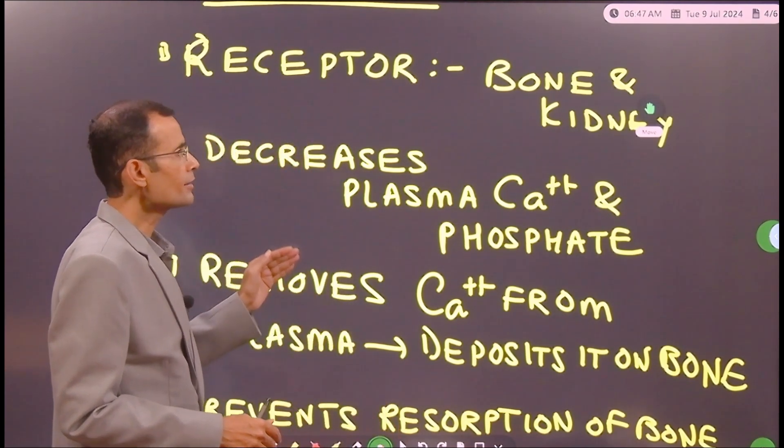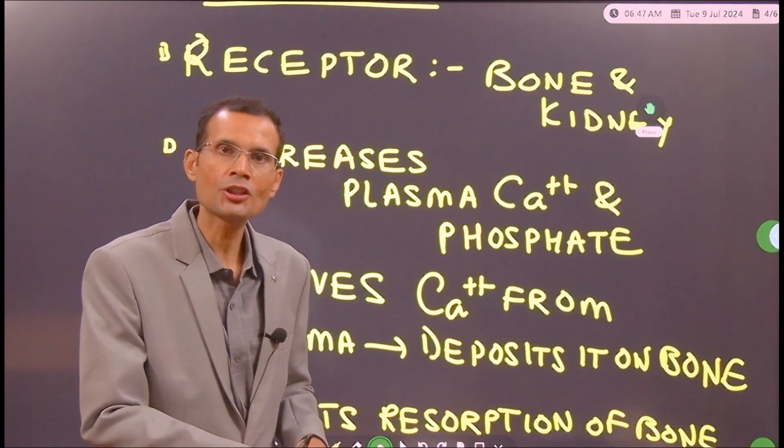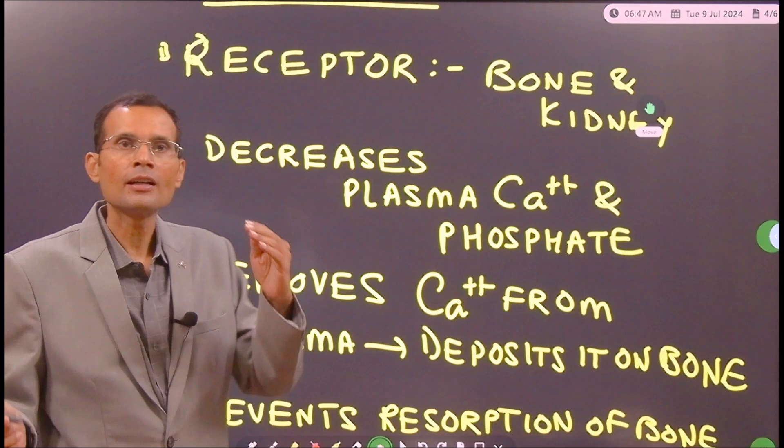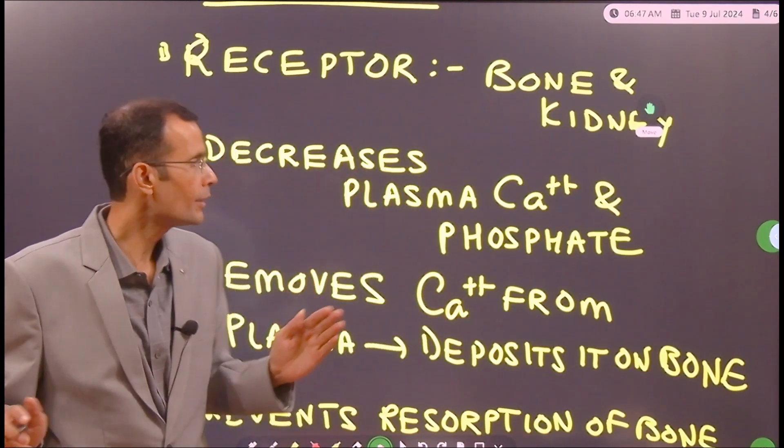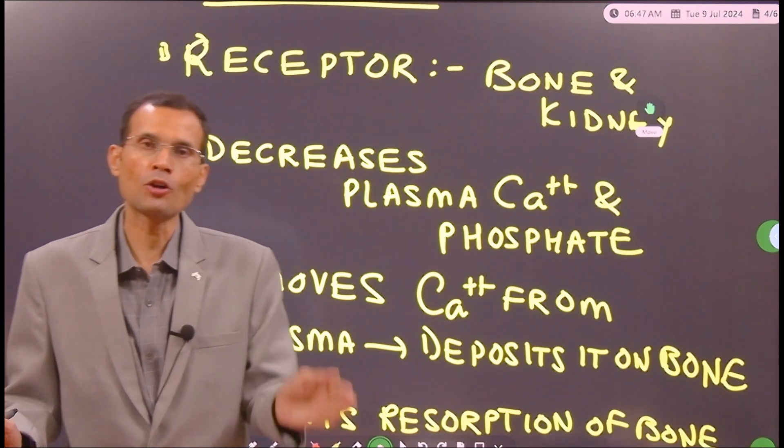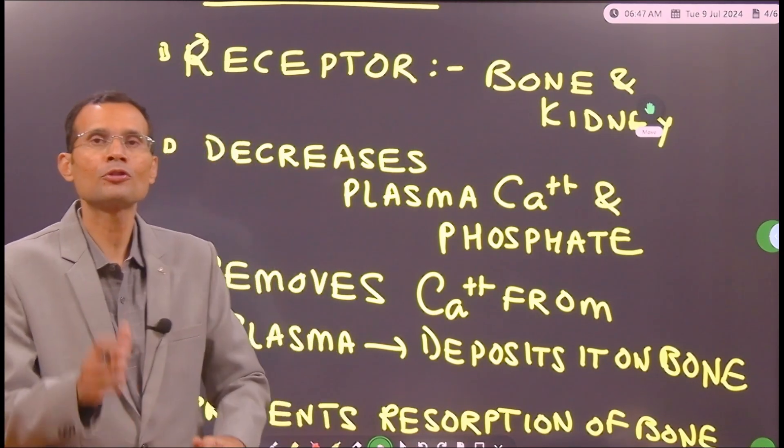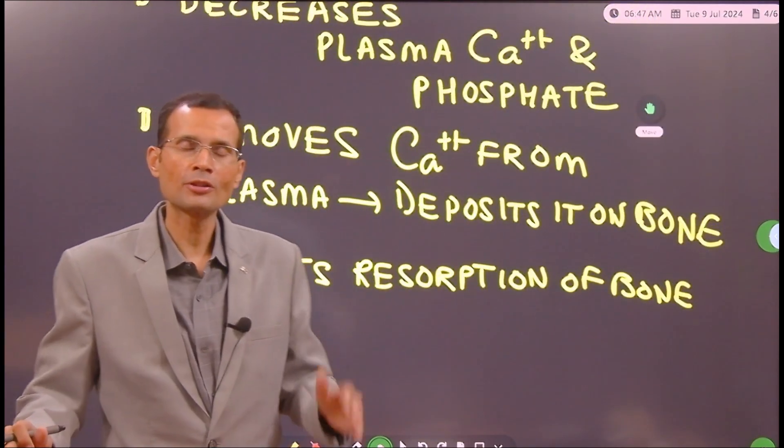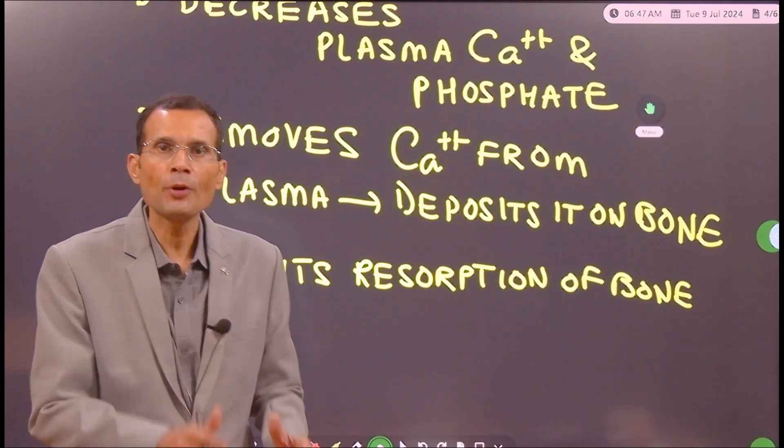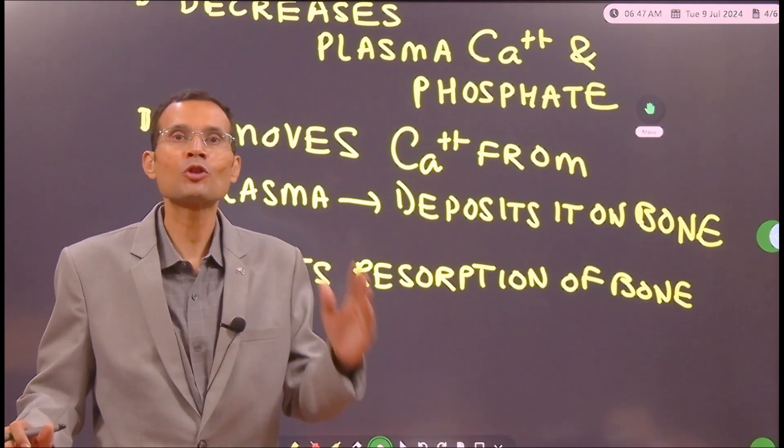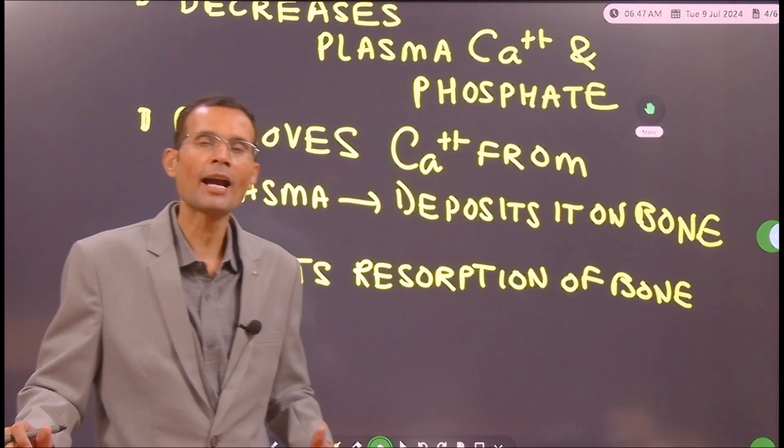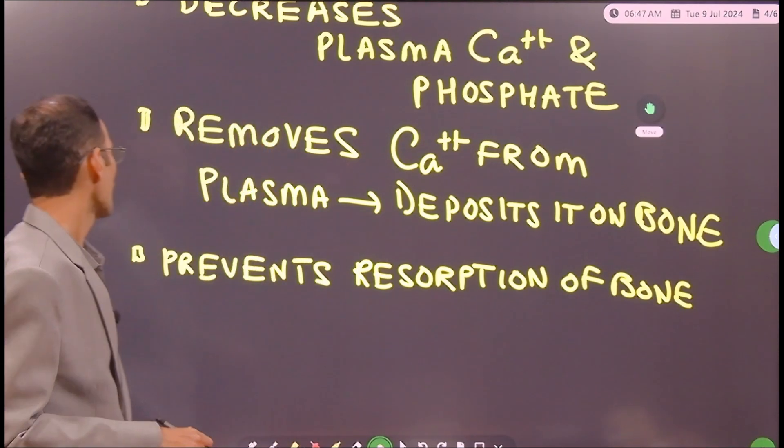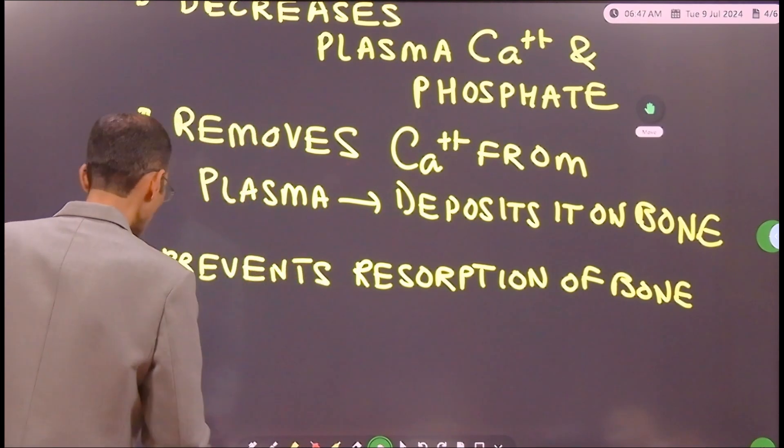Calcitonin causes increased excretion of calcium as well as phosphate. So it acts on kidney, it decreases the reabsorption of calcium as well as phosphate and both will be lost into urine under the influence of calcitonin. It removes calcium from plasma and deposits on bone and thereby prevents or reduces the resorption of bone. Bone resorption is prevented and I told you its physiological significance in pregnant mother and during lactation.